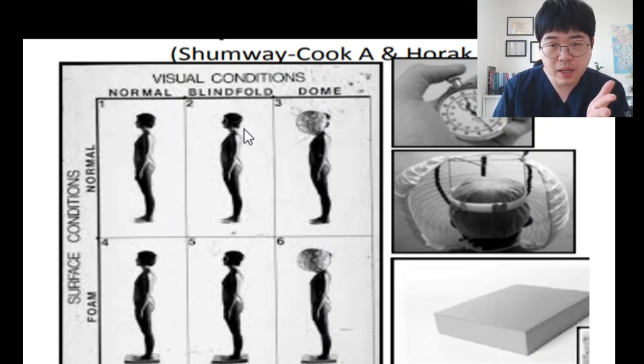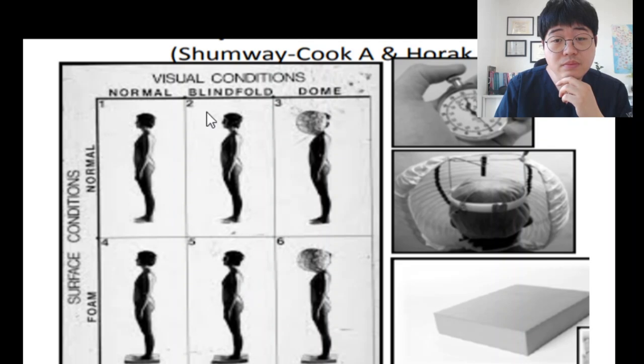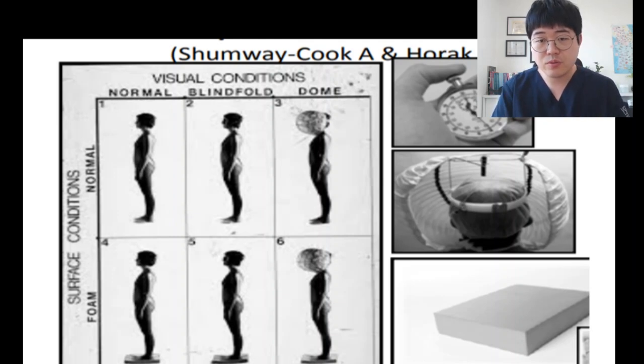Maybe vision is blocked or vision is half blocked. So if conditions 2, 3, 5, and 6 have problems, they have vision problems. If patients have problems with vision, conditions 2, 3, 5, and 6 will give them many problems because patients cannot see and cannot make the right balance.